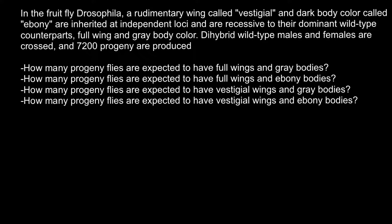Dihybrid wild-type males and females are crossed and 7200 progeny are produced, and we have to find answers to four questions. This is a very easy problem because it is a classical dihybrid cross. We have one parent that is hybrid for one gene and also hybrid for a second gene.